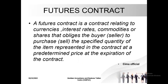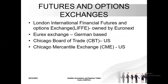So what's the futures contract? The futures contract is a contract relating to currencies — like in our case — to interest rates, or to commodities or shares. They oblige the buyer or the seller to purchase the specified quantity of the item represented in the contract at a predetermined price at the expiration of the contract. The only point to take note of is that futures create an obligation for you — you can't run away from them. There are a number of exchanges around the world where you can go and find these instruments.